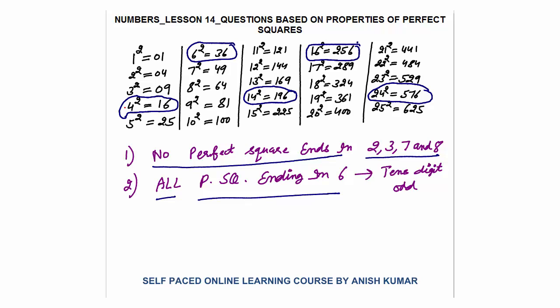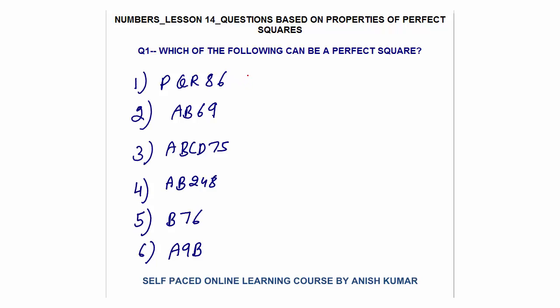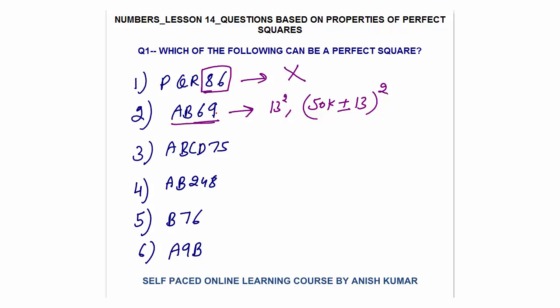Question 1: Which of the following can be a perfect square? First option: a number ending in 86 — 86 does not appear as the last two digits in any square from 1 to 25, so this is not a perfect square. Second option: ab69 — 69 appears in 13 squared, so this can be a perfect square.